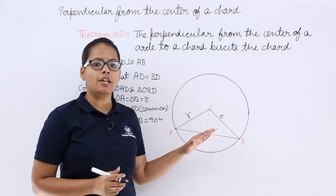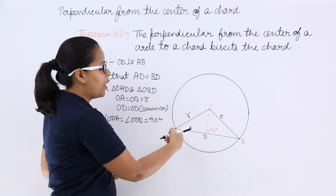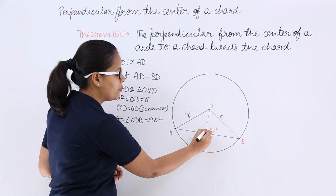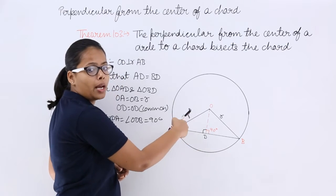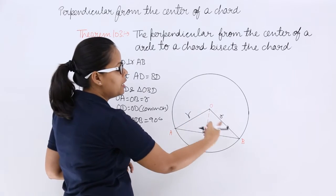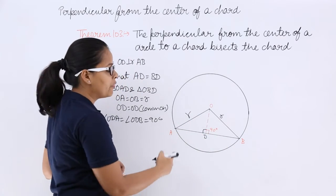This is a right angle triangle where OA and OB are the hypotenuse, because there is a right angle at D. OA will be the hypotenuse of triangle ODA, and OB will be the hypotenuse of triangle ODB.